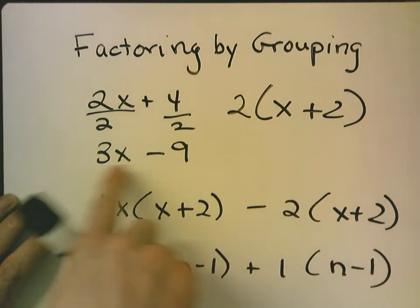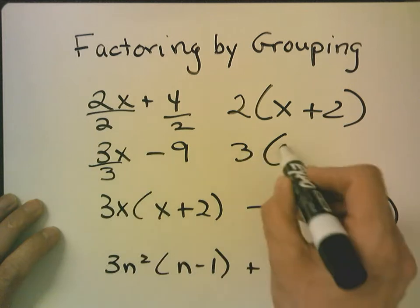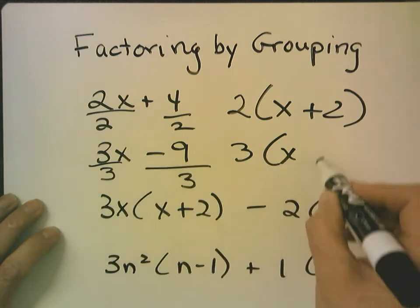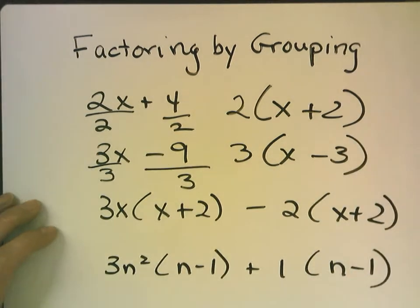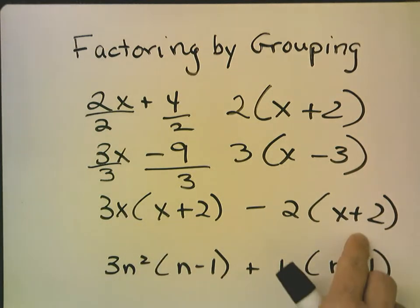Here, you look for the GCF, which is 3. You say 3x divided by 3 is x, negative 9 divided by 3 is negative 3. Now, if we look at this expression, it looks a little strange, but still, what do we notice is a common factor in each one? x plus 2 and x plus 2.